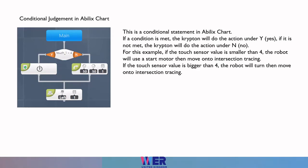For this example, if the touch sensor value is smaller than 4, the robot will use a start motor, then move on to intersection tracing. If the touch sensor value is bigger than 4, the robot will turn, then move on to intersection tracing.